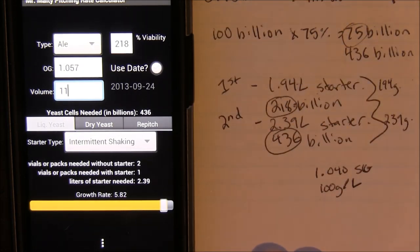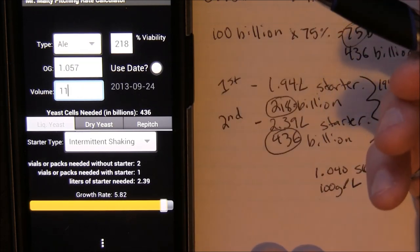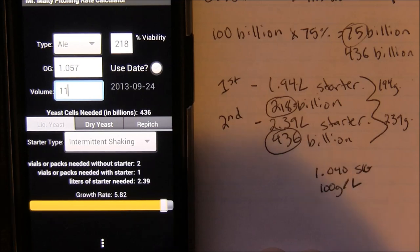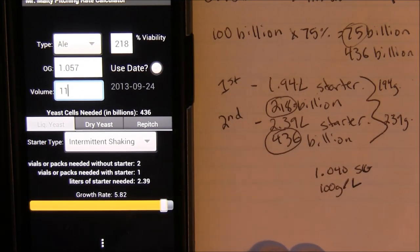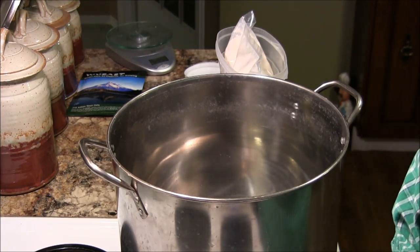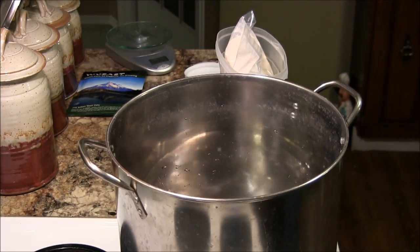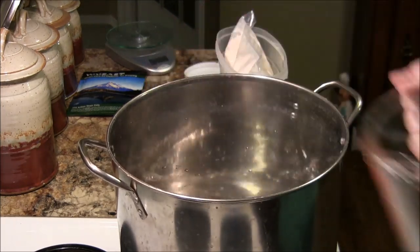So I'm going to go upstairs and do a quick rundown of how to make this. You just boil the DME with the water, then pitch your yeast — obviously cool it first. For stage two, I'll put the stage-one starter in the fridge to help settle the yeast to the bottom, dump as much liquid off as I can, then add in 2.39 liters of additional starter, let that ferment out, cool it down, decant the liquid, and pour the yeast into the beer. Now let's go upstairs — basically all we have to do is measure out our water, bring it to a boil, and add our DME. We're putting in 1.94 liters of water.